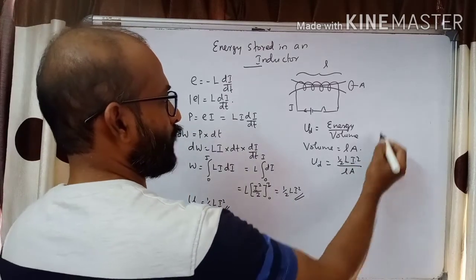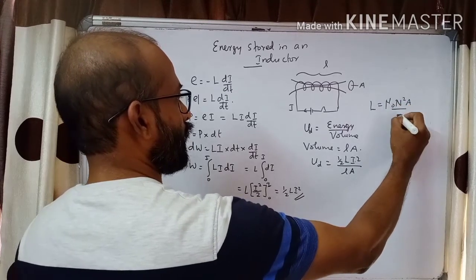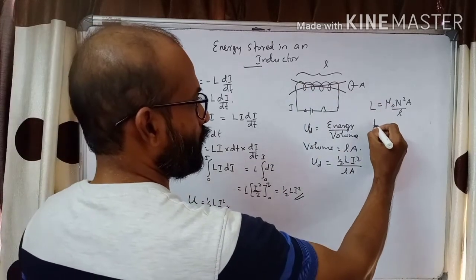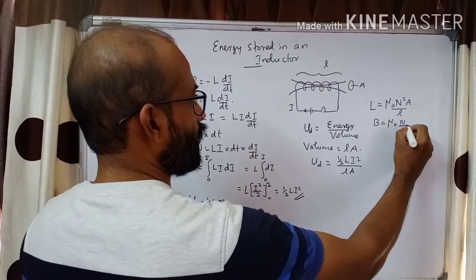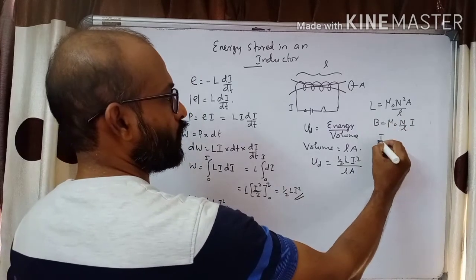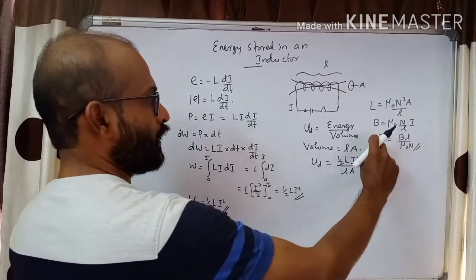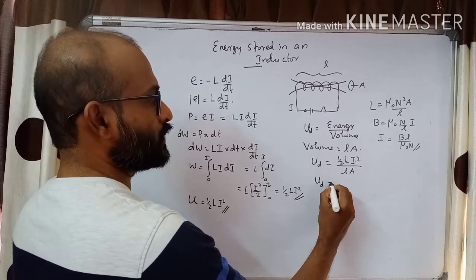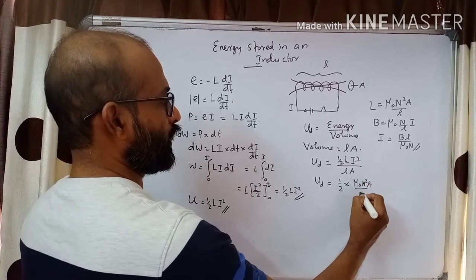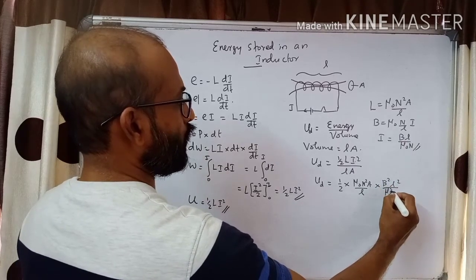Now we will modify the equations for L and I. We know that self-inductance is given by L equals μ₀N²A divided by l. The magnetic field within the solenoid is given by B equals μ₀N divided by l times I, so I equals B·l divided by μ₀N. Substituting into the energy density: U_d equals half times (μ₀N²A/l) times (B²l²)/(μ₀²N²), all divided by l times A.